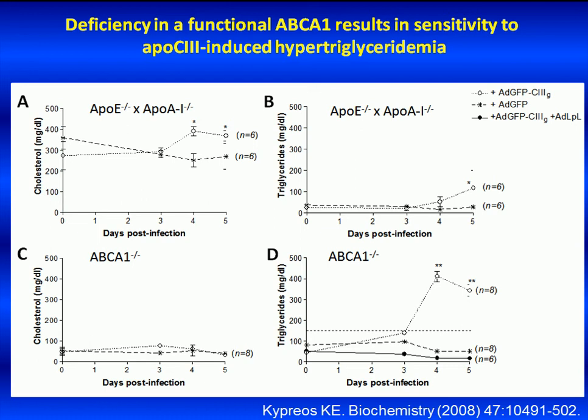In contrast, expression of human ApoC3 in ABCA1-deficient mice had no significant effect on plasma cholesterol of these mice, although it triggered severe hypertriglyceridemia on days 4 and 5 post-infection. As a control, treatment of ApoE1 double-deficient mice or ABCA1 single-deficient mice with the control adenovirus expressing the green fluorescence protein did not significantly change plasma cholesterol and triglyceride levels.